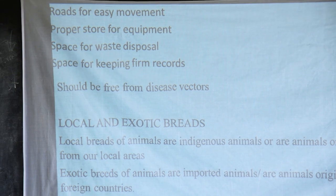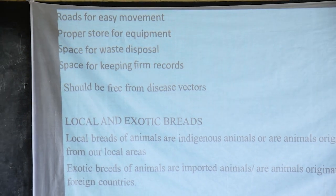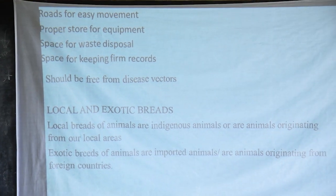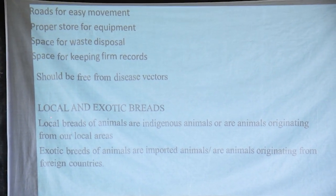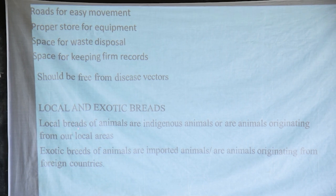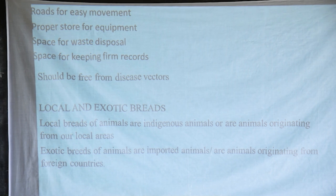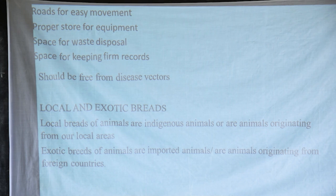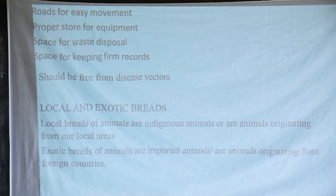Now this takes us to local and exotic breeds. We have different groups of animals. When grouping breeds, we have local breeds and exotic breeds. Local breeds are animals that are indigenous — originating from our local areas. These are also called native breeds, as they originate from the local environment.